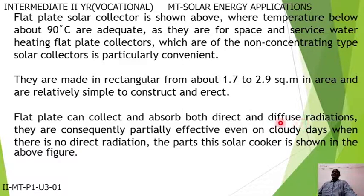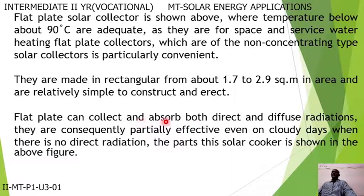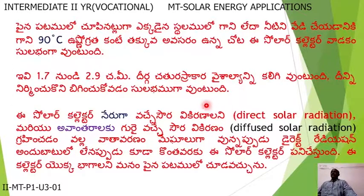Whenever sun rays pass through the atmosphere, they undergo obstructions like clouds, and that kind of radiation is called diffused radiation. Therefore, flat plate solar collectors absorb both types of radiation and are partially effective even on cloudy days.